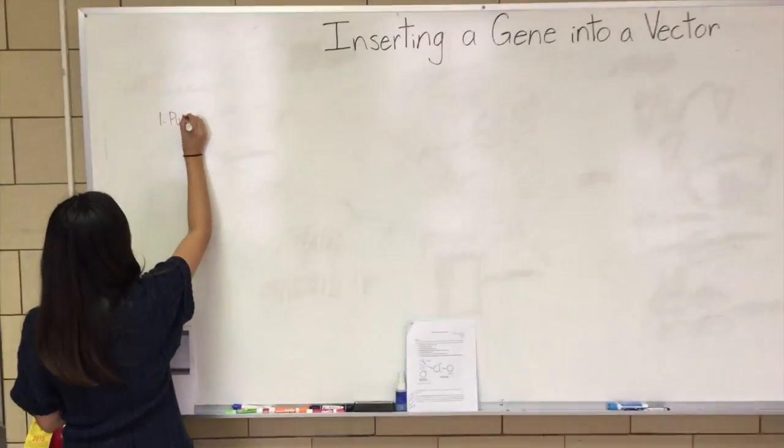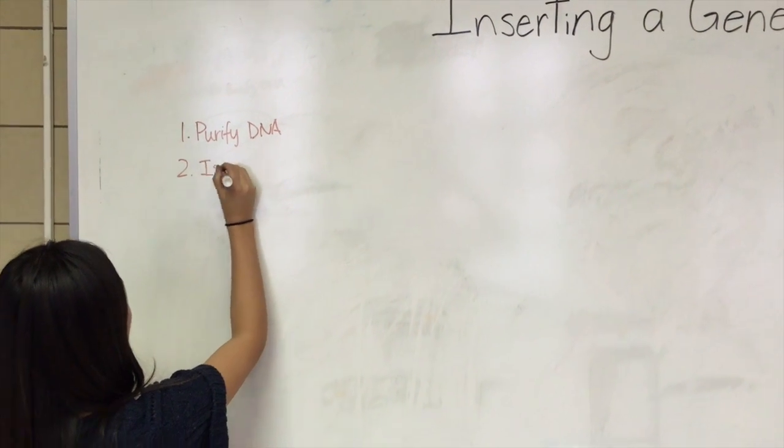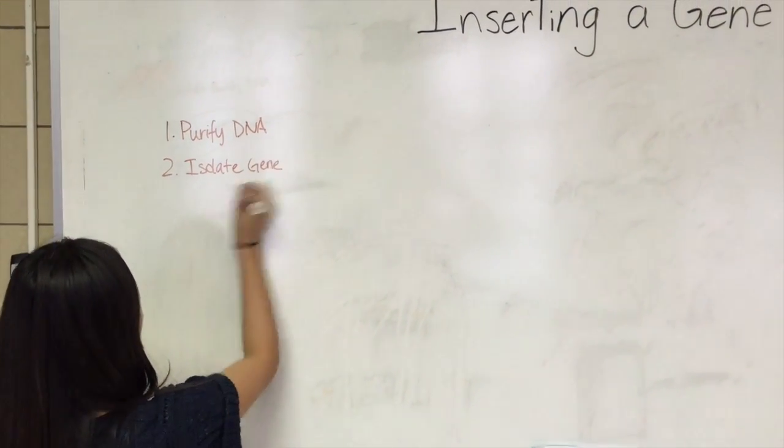There are seven main steps. The first is to purify the DNA with the gene of interest. The second step is to isolate the gene of interest.